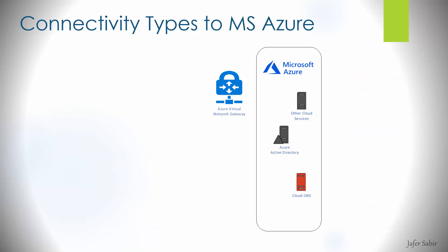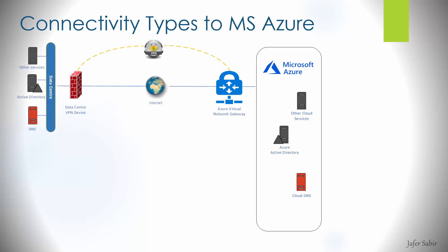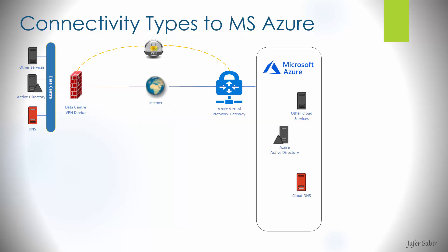Now let's look at the four connections in more detail, starting with site-to-site VPN. Site-to-site VPN provides connectivity between your data center or office and your Azure virtual network. You would use this if you're connecting all of your users who work in an office to the Azure cloud — this could be hundreds or even thousands of users — and it would provide a secure connection between your office or data center and the Azure cloud environment.